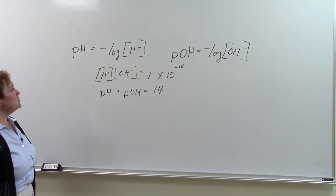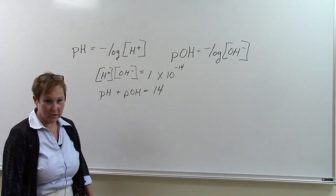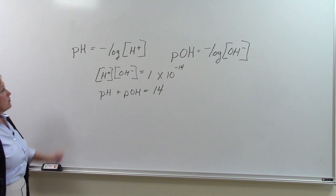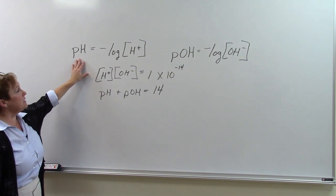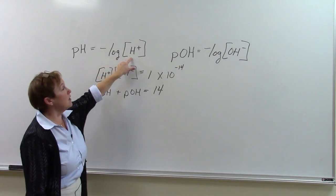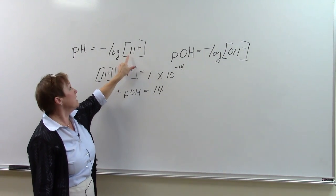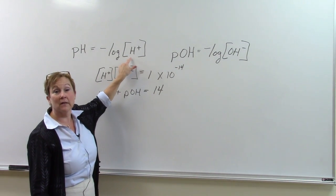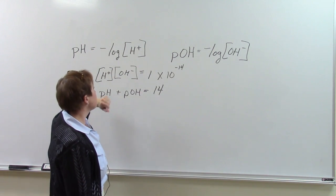Alright, today we're going to talk about doing pH calculations, so grab your calculator. Remember, the definition of the pH is the negative log of the hydrogen ion concentration. This concentration is molarity, moles per liter.